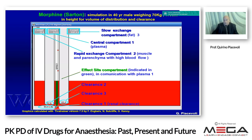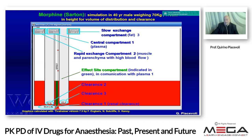Here is a representation of morphine. You can see how different the three compartments are: a very small central compartment in green, the effect site compartment in close communication with the central compartment, the high blood flow organ concentration, and a large third compartment. With morphine, there is high accumulation in the third compartment — so it is not a friendly drug; it is a long-acting drug. We must calculate the KE0 exactly to understand the pharmacokinetics of morphine.